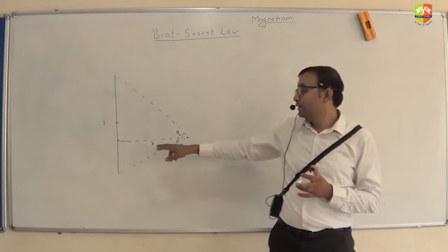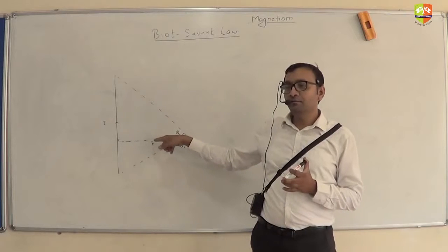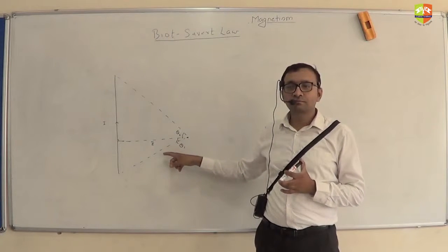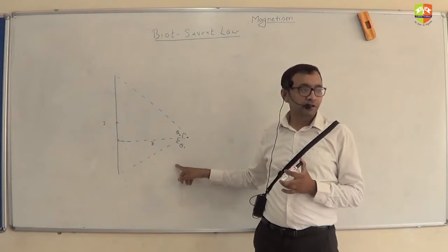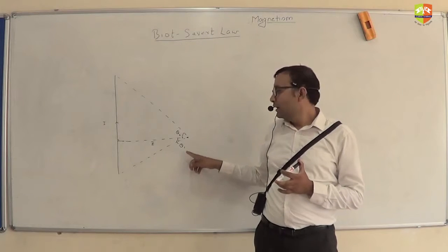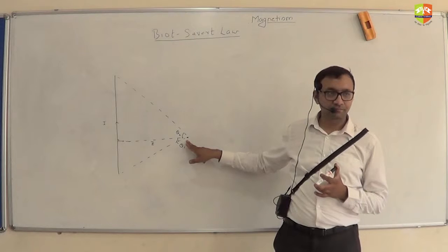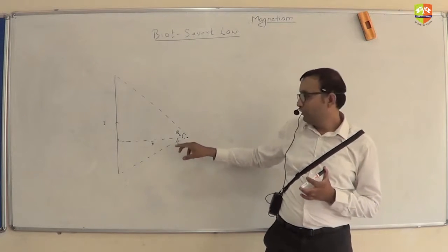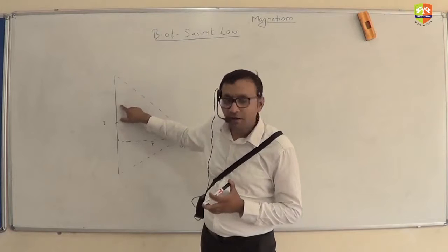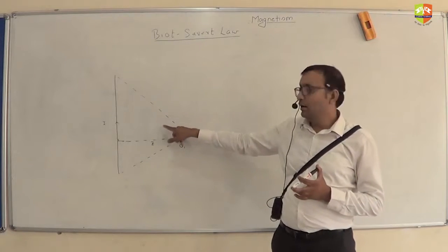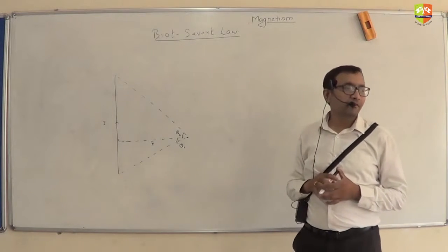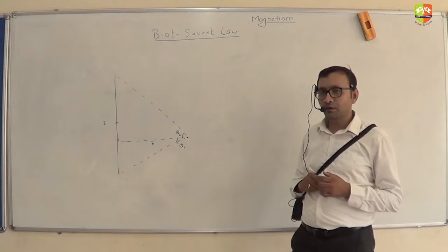Are you able to recollect a similar diagram we have seen somewhere where we formulated field and potential? So you have to find out the magnetic field at this point. Now take a small dl element somewhere, draw r vector and draw the magnetic field vector.